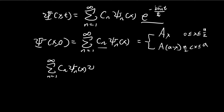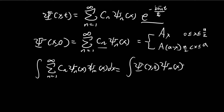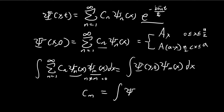We do that by applying Fourier's trick. We multiply both sides by another stationary state m, where m is some arbitrary constant. On the right-hand side, we have the initial wave function times the m stationary state, and then we integrate both sides. Because the stationary states are all orthogonal, for all terms where n is not equal to m, they are equal to 0. The only term that survives is n equal to m, which by definition integrates to 1. So on the left-hand side we are left with cm, and on the right-hand side we have this integral. Evaluating this integral gives us our cm.